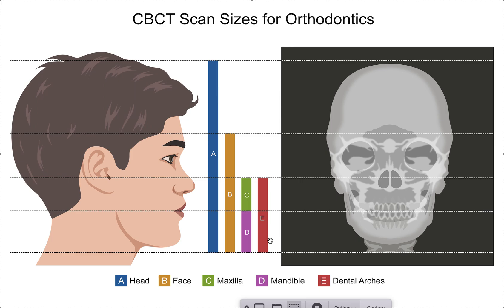Good question: can you add a CBCT scan to an existing comprehensive order? It can be added to a previously created comprehensive order if the order hasn't been submitted, but once it's submitted you can't add it — unlike a panel which you can add later. Basically, once you submit it, it's too late.